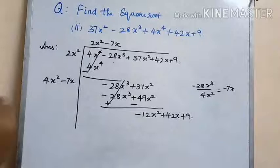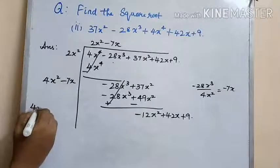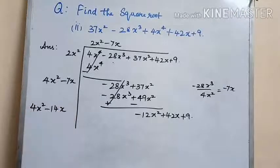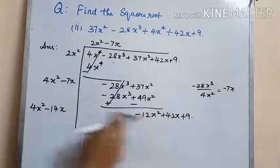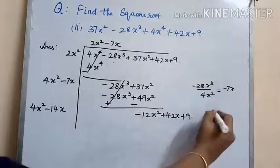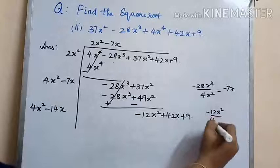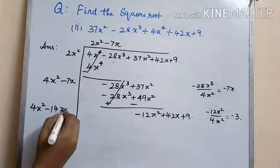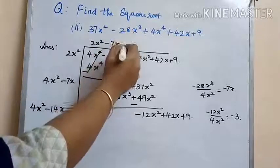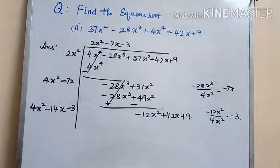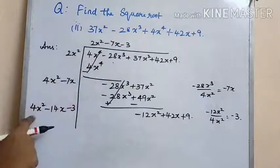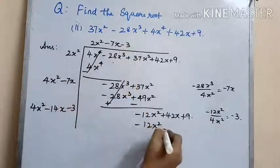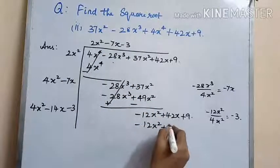In the next step we have 4x squared, and doubling minus 7x we get minus 14x. The next quotient is minus 12x squared divided by 4x squared, which gives minus 3. That is the next quotient part. Now multiplying we get minus 12x squared plus 42x plus 9.